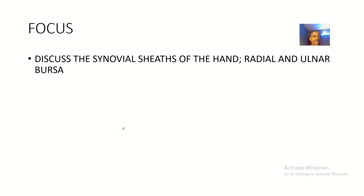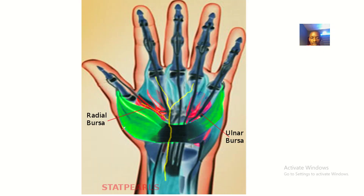Good evening. We're continuing with upper limb anatomy, and today we'll be talking about synovial sheets of the hand, which are the radial and the ulnar bursa.